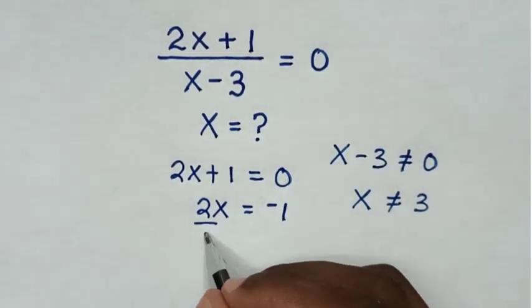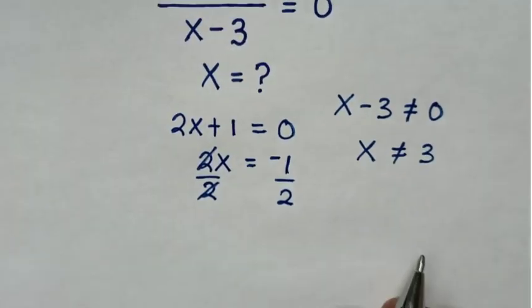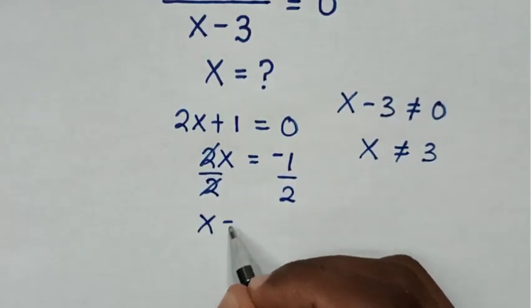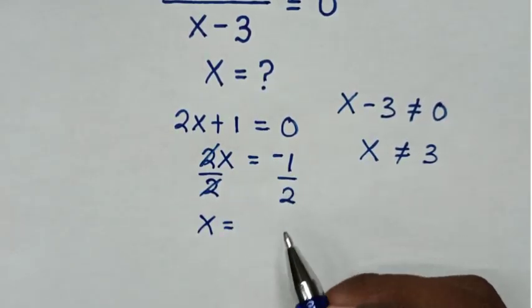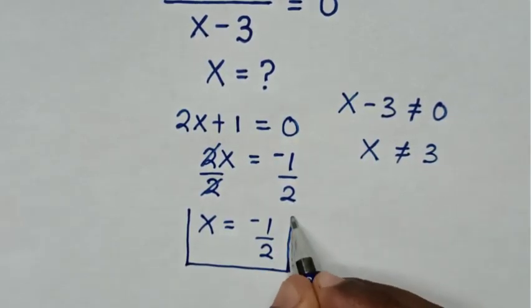Then we divide by 2 on both sides. So this and this will cancel. Then it will be x is equal to negative 1 over 2. So this is our final answer.